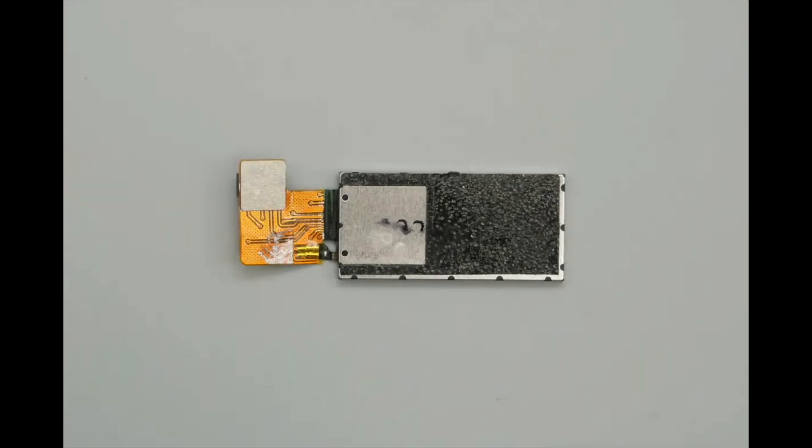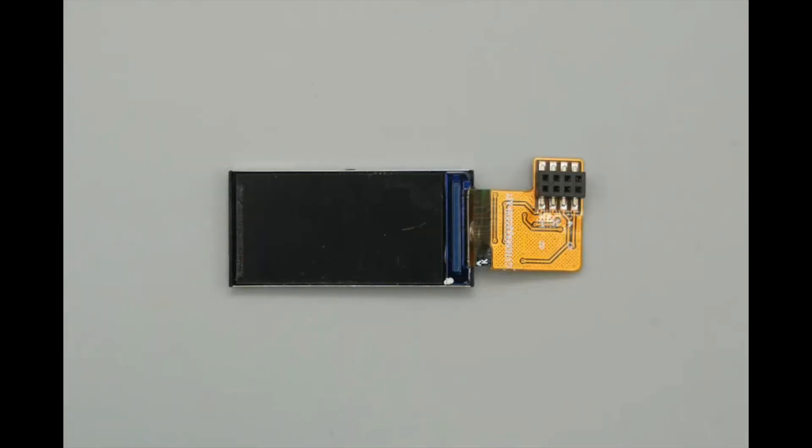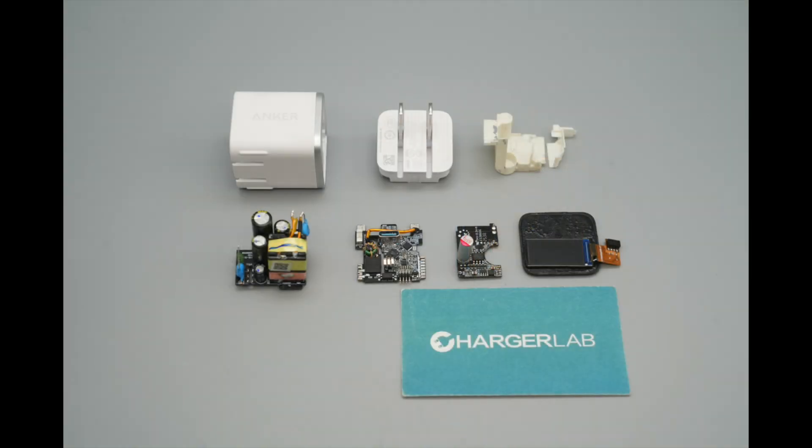The back of the display is lined with foam padding. The ribbon cable features a pin header socket. Well, those are all the components of the Anker Nano 45 Watt GaN charger with display. We'll see you in the next one.